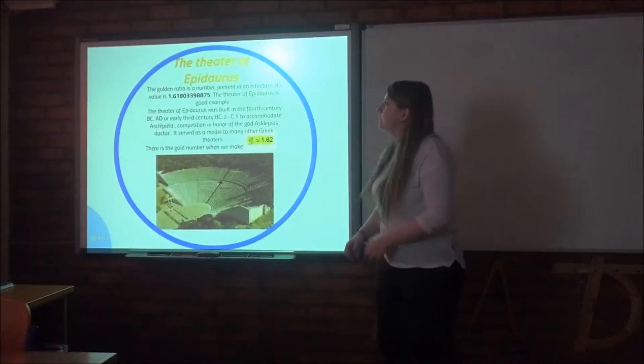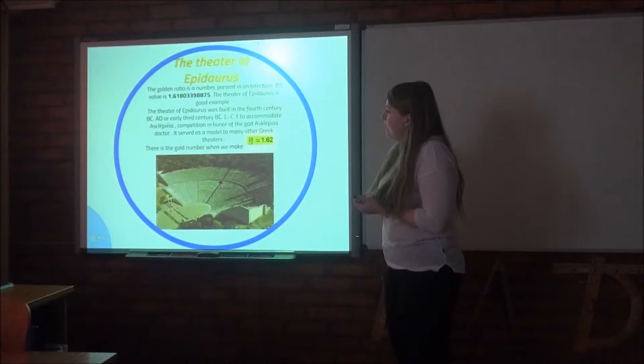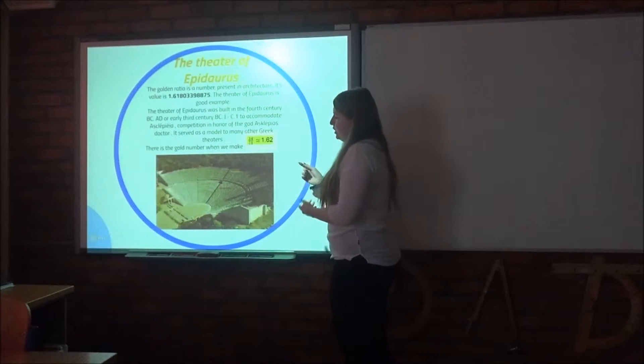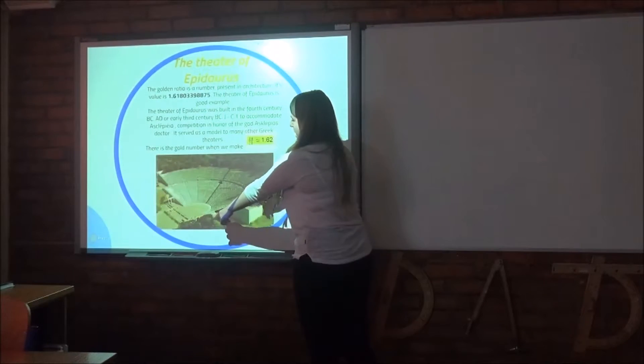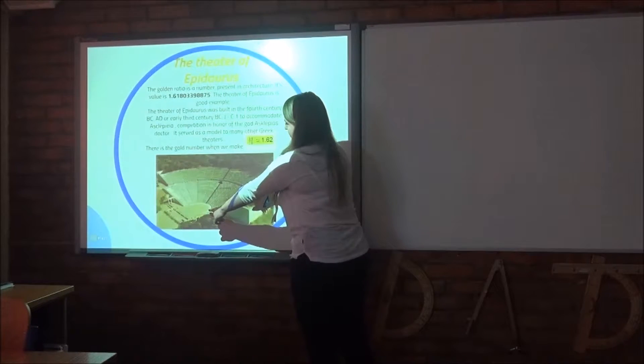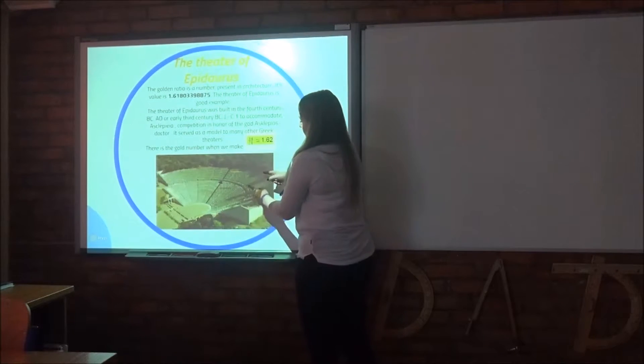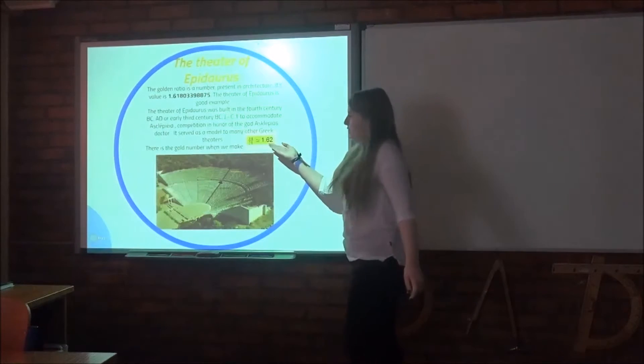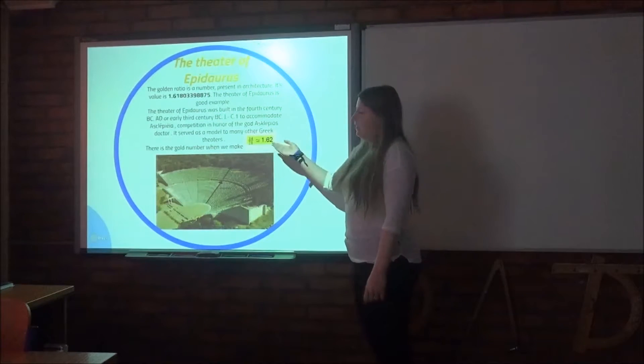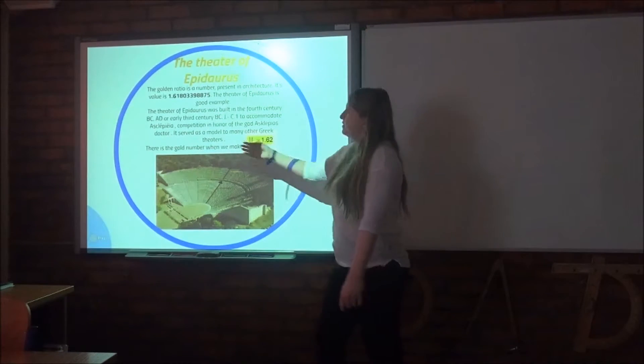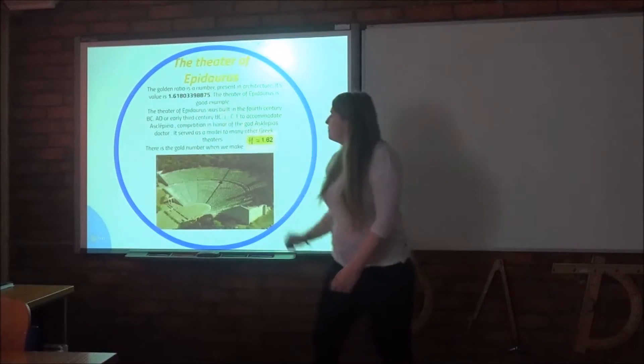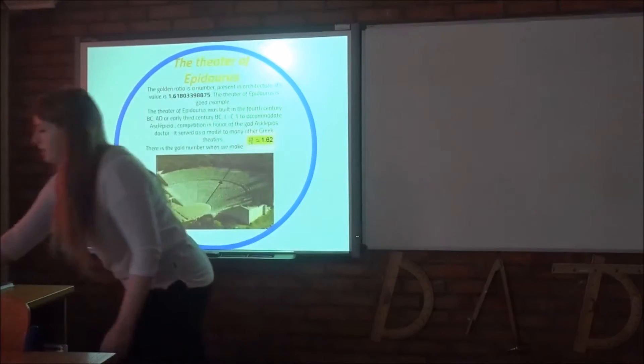Next one is the Theatre of Epidaurus. And we have the bleachers here. And here, here are 34 and here 21. And as you can see here, it's shown that it's the same as the value of phi. So the golden ratio is here also.